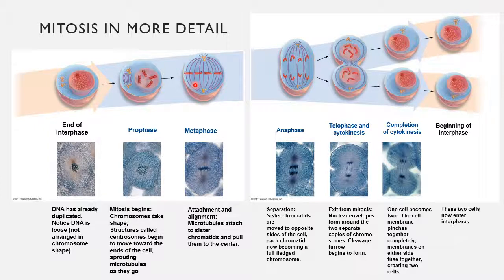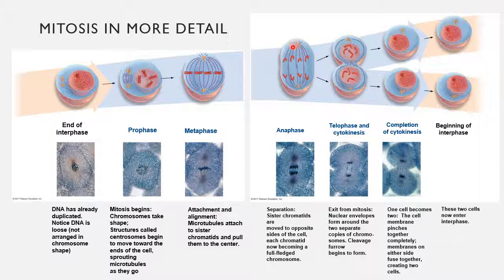Next we have metaphase, where the chromosomes become attached to the microtubules and the chromatids get lined up at the center of the cell. During anaphase, the sister chromatids are moved to opposite sides of the cell — one half gets pulled by the microtubules to one side of the cell and the other half gets pulled to the other side.